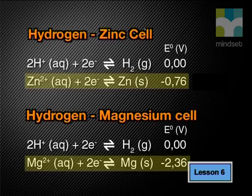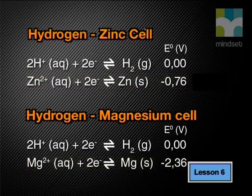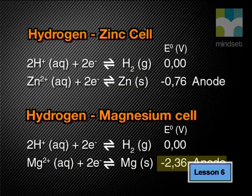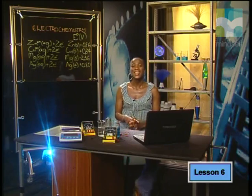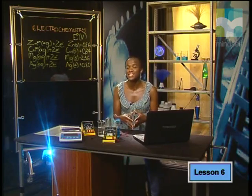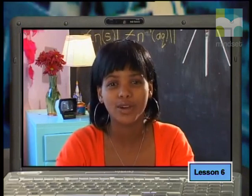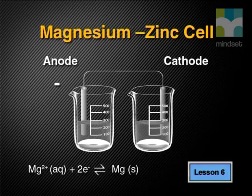Relative to the hydrogen half cell, the zinc electrode is the anode, but the magnesium electrode is also the anode. The difference is that the E° value of magnesium is a much larger negative value, which tells us that the magnesium electrode is a much stronger reducing agent than zinc. So when a magnesium half cell is connected to a zinc half cell, the magnesium is the anode.